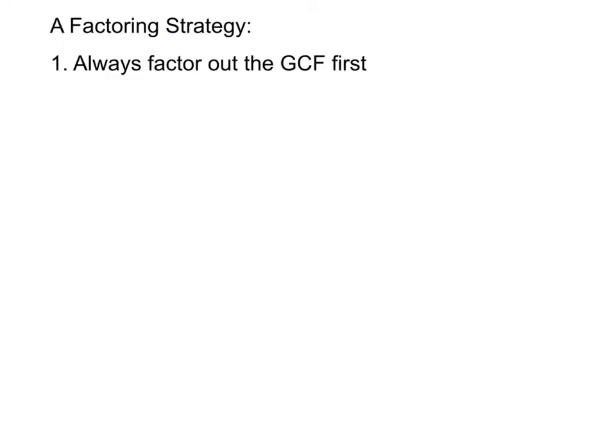The first thing you always want to do is factor out the GCF — the greatest common factor — first. Always check whether there's a GCF that you can factor out of every term. Sometimes there won't be one, but always check. If there is a GCF other than 1, factor it out at the very beginning.